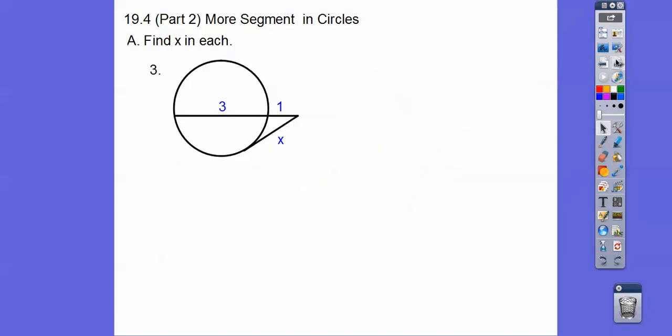Here this is a tangent segment. Outer times whole equals the tangent segment squared. Since the tangent segment is x, I put that on the left. So tangent segment squared equals outer times whole. Here the whole is 4. So x squared equals 1 times 4 and you get x equals 2. In algebra it would be plus or minus 2, but since we're talking length here, it's just 2.